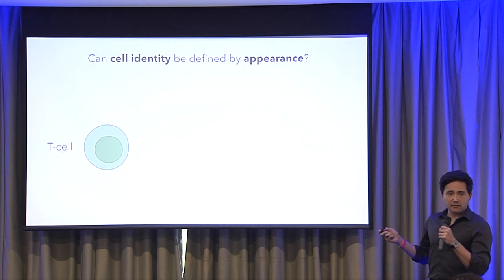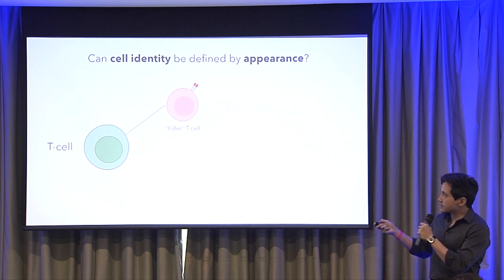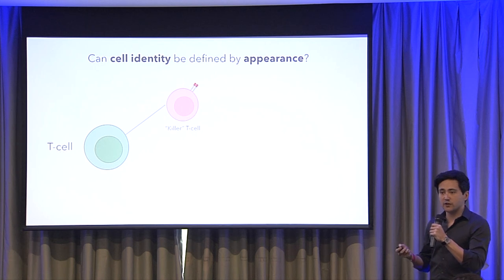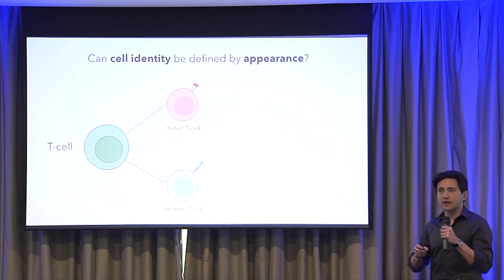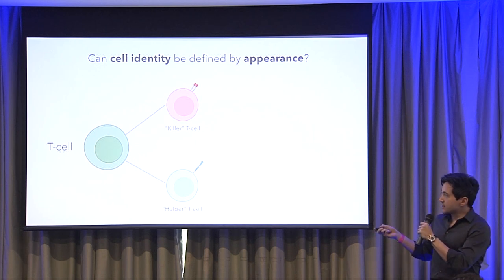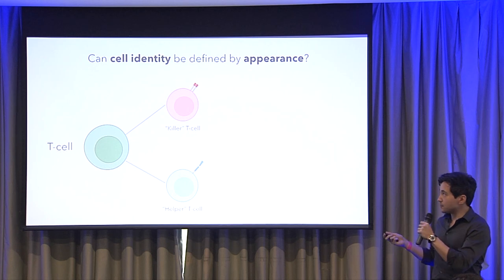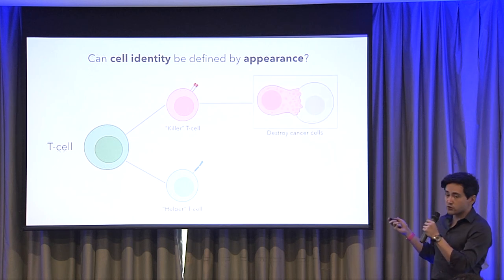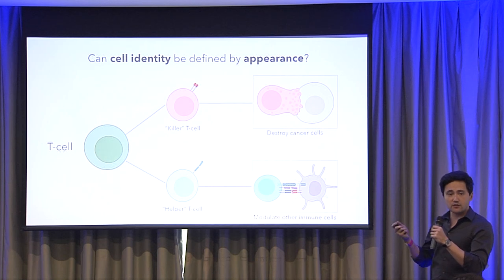But is appearance enough? No. Here's a T cell, which is one of the immune cell types in the body. You can have a T cell that is a killer T cell — it performs its immune functions by destroying other cells that have been infected by viruses or have turned cancerous. Or you can have a T cell called a helper T cell, which performs more of a supporting or recruiting role by working with other cell types in the body. These cells under a microscope look very, very similar, unless they're actually in the process of killing another cell. Despite their appearance looking very similar, their actual functions are very distinct.